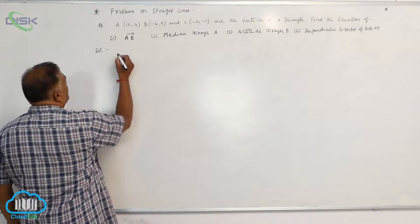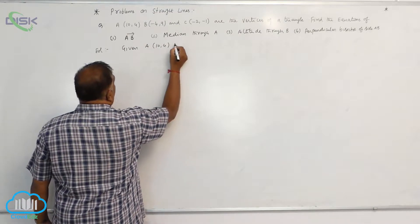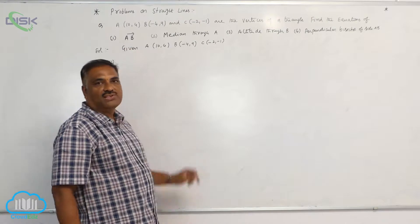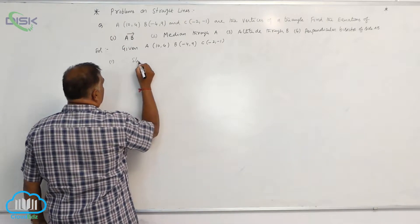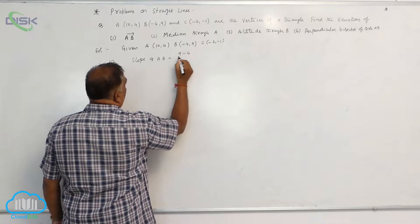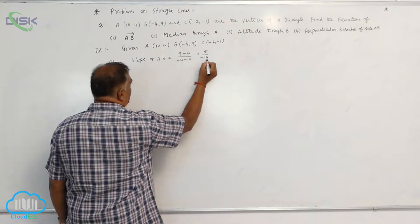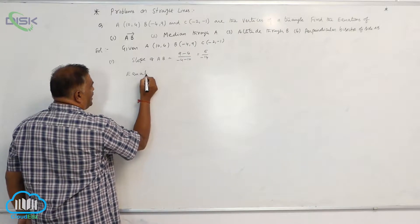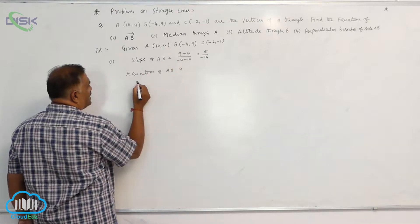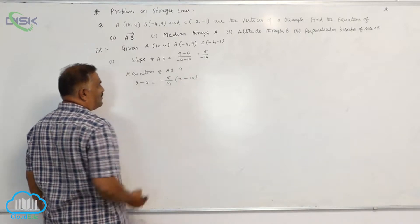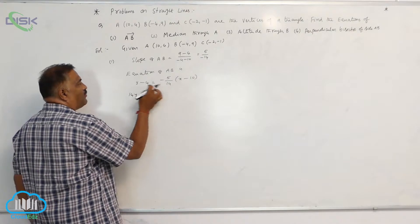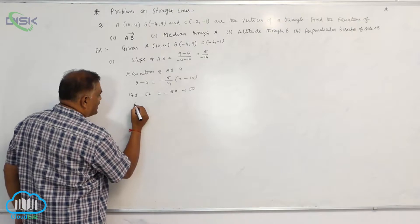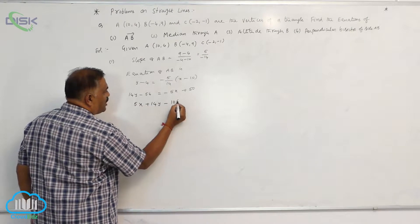Given points are A(10, 4), B(-4, 9), C(-2, -1). For the first part, we require the equation of AB using the two-point form. First, we find the slope of AB: (9 - 4) / (-4 - 10) = 5 / -14. Now using point-slope form: y - 4 = (-5/14)(x - 10). Cross multiplying: 14y - 56 = -5x + 50. Bringing all terms to one side: 5x + 14y - 106 = 0.